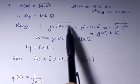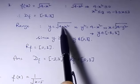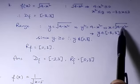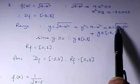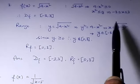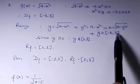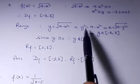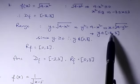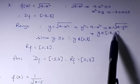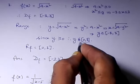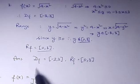Now let's find the range. We write y = √(9 - x²). Squaring both sides, y² = 9 - x², so x² = 9 - y². For x to be defined, 9 - y² must be greater than or equal to 0, which means y² ≤ 9, so y is between -3 and 3, closed. But since y = √(9 - x²), y must be greater than or equal to 0. So the range is y between 0 and 3, closed: [0, 3].